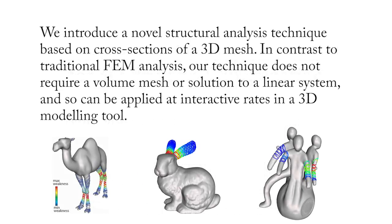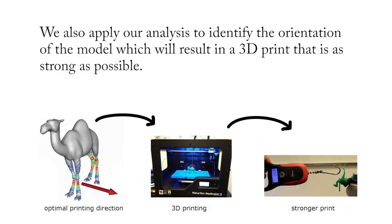In this paper, we introduce a novel structural analysis technique based on cross sections of a 3D mesh. We also apply our analysis to identify the orientation of the model which will result in a 3D print that is as strong as possible. Please see the paper for details.